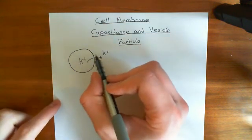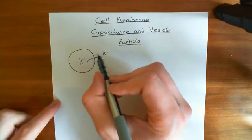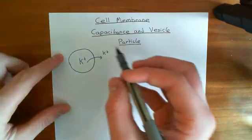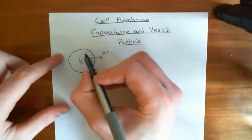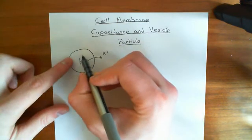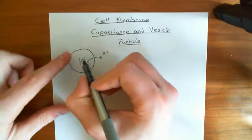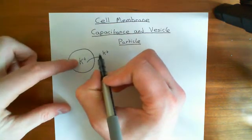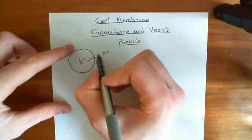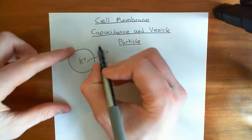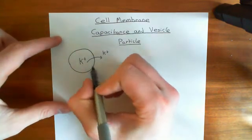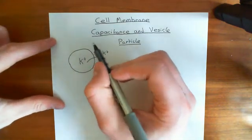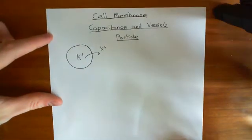Moving potassium out causes the intracellular compartment to lose some positive charge and therefore get a lower electrical potential, giving us an electrical potential difference across this membrane. More complicatedly, you also have sodium — sodium movement in, potassium movement out — and overall you move more potassium out than sodium in. So overall, some positive charge has been moved from the intracellular to the extracellular compartment. But we'll keep it simple and just think about potassium.